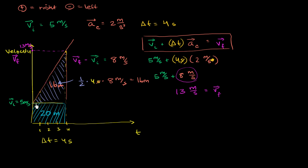So the total distance we traveled is 20 plus 16, which is 36 meters. That is the total displacement. Since it is positive, it is to the right. Now what I want to do is perform this exact same calculation but keep it in variable form, which will give another formula that many people often memorize. But I want you to understand that it's a completely intuitive formula.